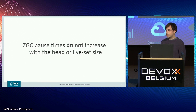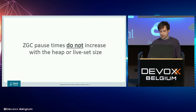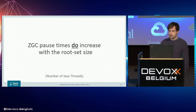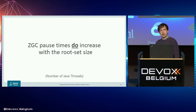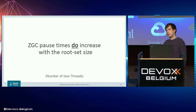The main point we're trying to get across is that with ZGC, the pause times do not scale at all with the size of your heap or the live set. Instead, it scales with the size of your root set. There are parts of the root set we can scan concurrently, but there are parts we can't — and this typically comes down to the number of threads you have, because we have to traverse the stacks.